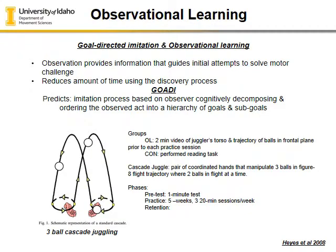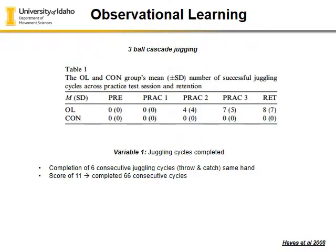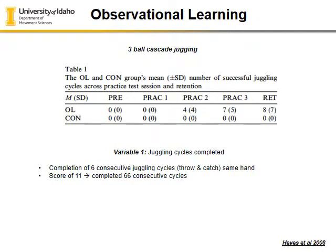Was it beneficial to do some juggling with observational learning? A group that did observational learning was compared to a control group that did not watch anybody. The number represents completion of six consecutive juggling cycles. The observational learning group was the only one that actually succeeded, likely because they observed the task and were able to learn how to perform or correct their juggling abilities.